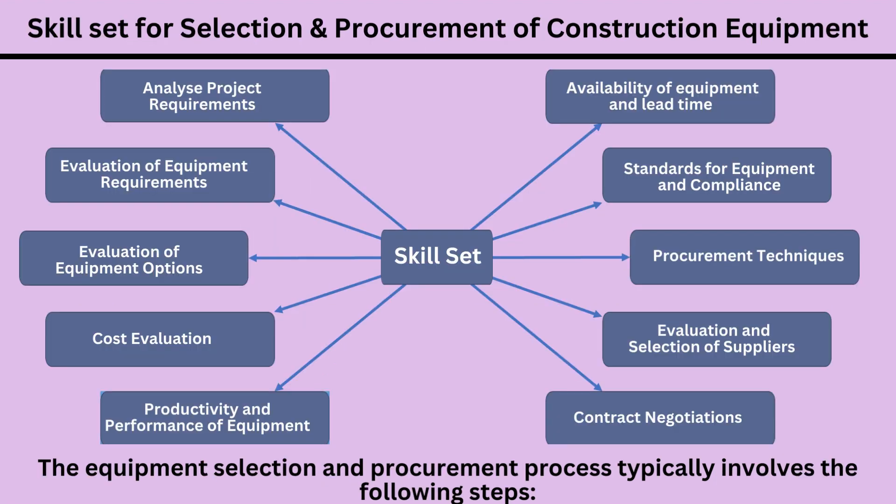The equipment selection and procurement process typically involves the following steps: A. Analyze project requirements. B. Evaluation of equipment requirements. C. Evaluation of equipment options. D. Cost evaluation. E. Productivity and performance of equipment. F. Availability of equipment and lead time. G. Standards for equipment and compliance. H. Procurement techniques. I. Evaluation and selection of suppliers. J. Contract negotiations.